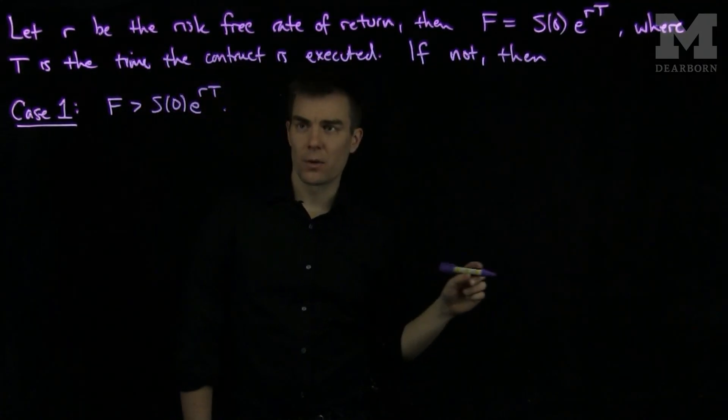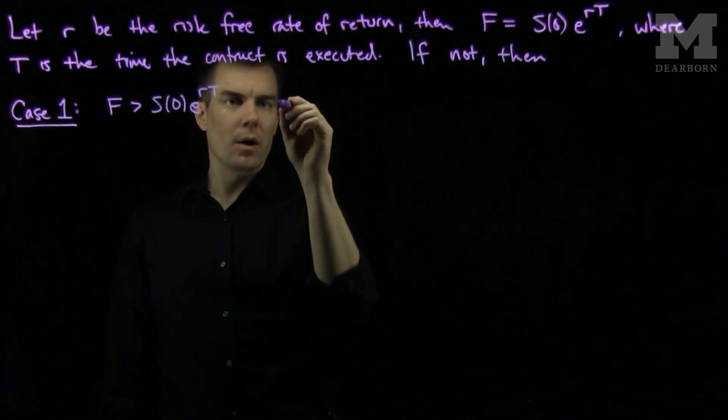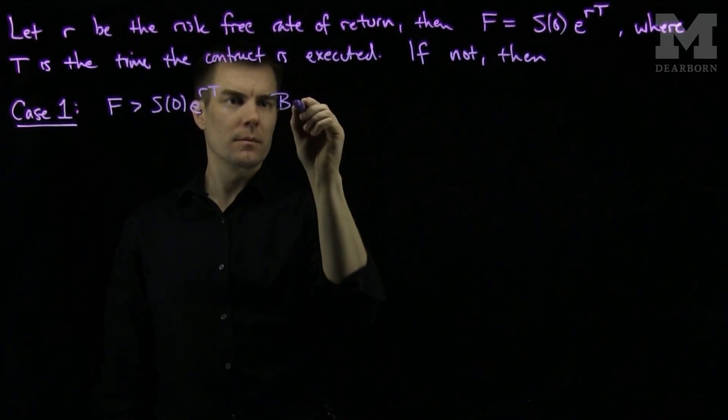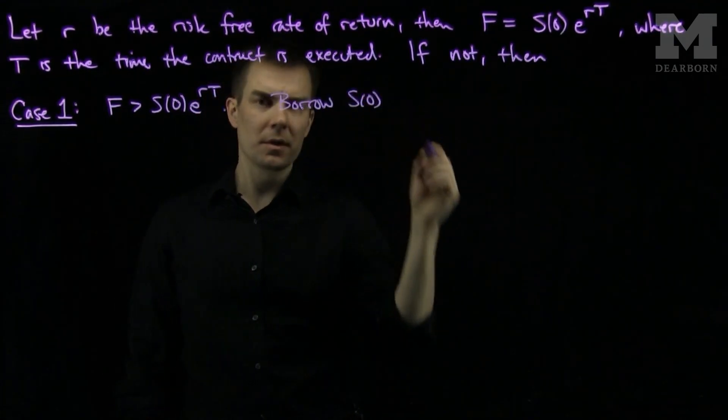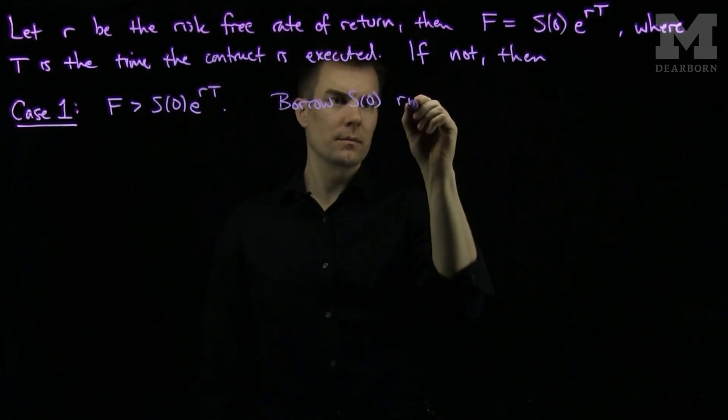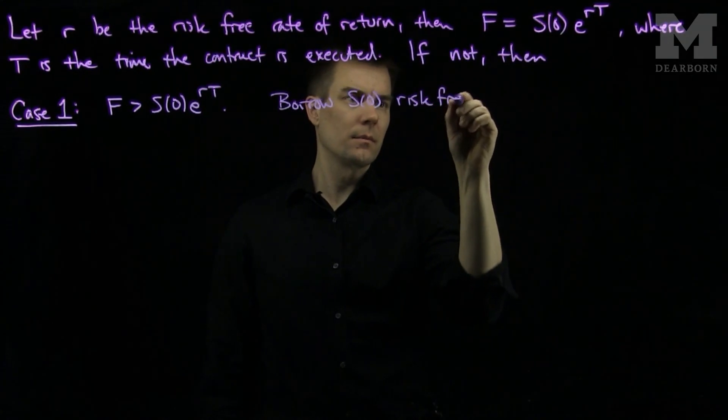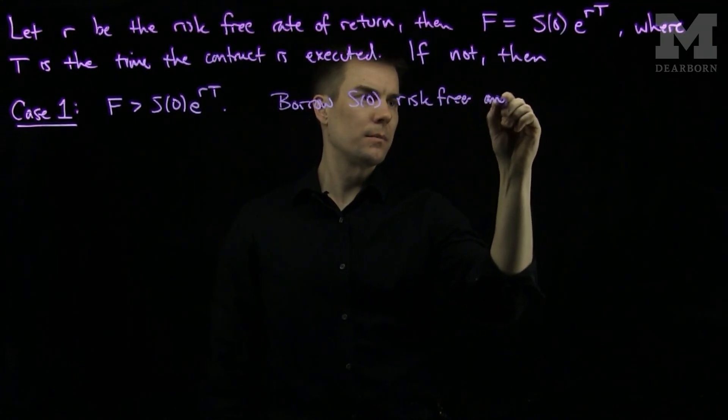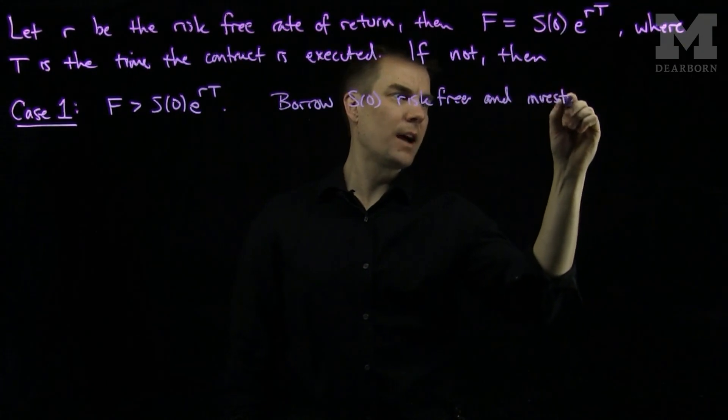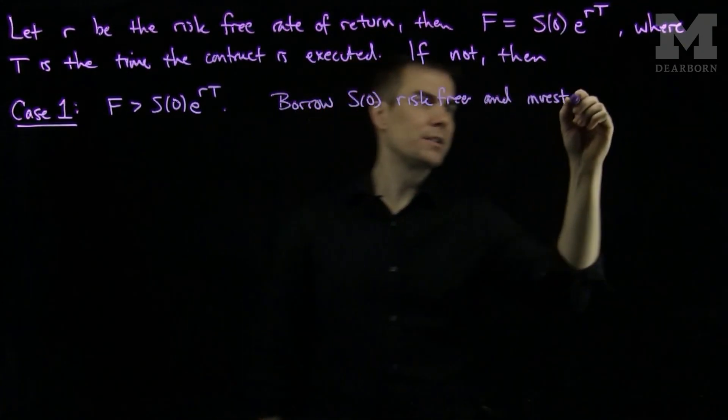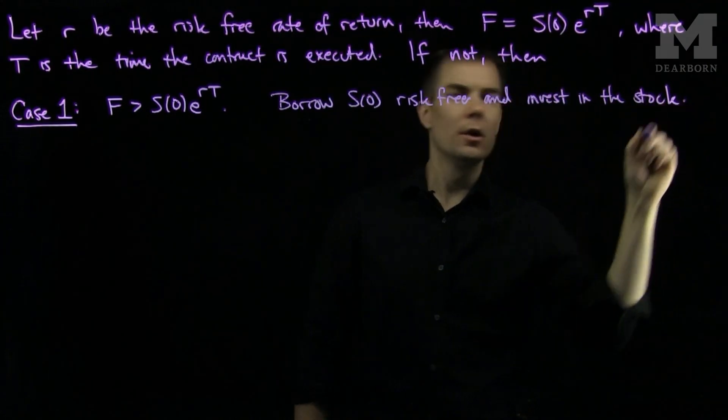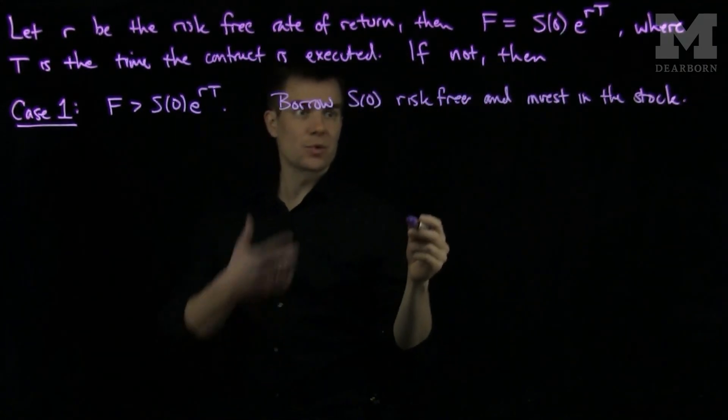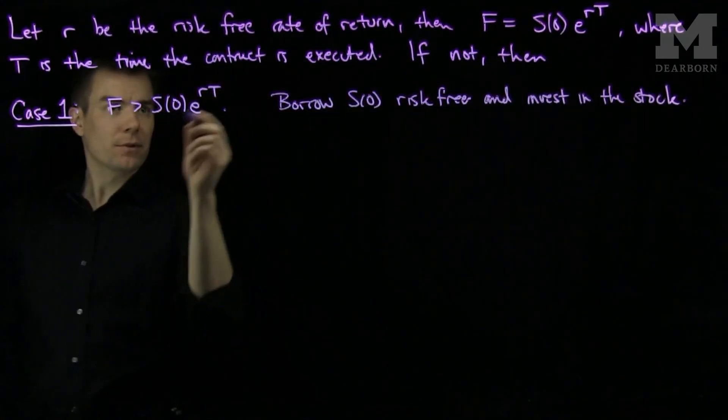In this case, what we can do is the following. We can borrow S0 from the bank and invest in the stock. We can purchase the stock since we borrowed that money. After time T,